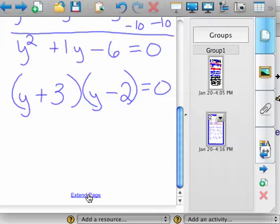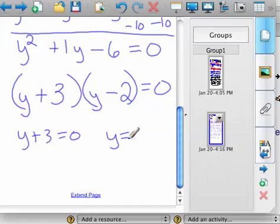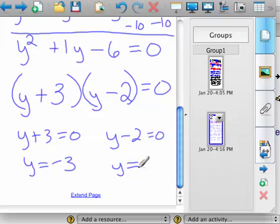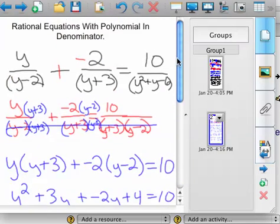And what happens here, when you set these equal to 0, we have really a problem in this equation. And you solve these, y equals negative 3, and or y equals 2. But we have a problem with the rational part of this.